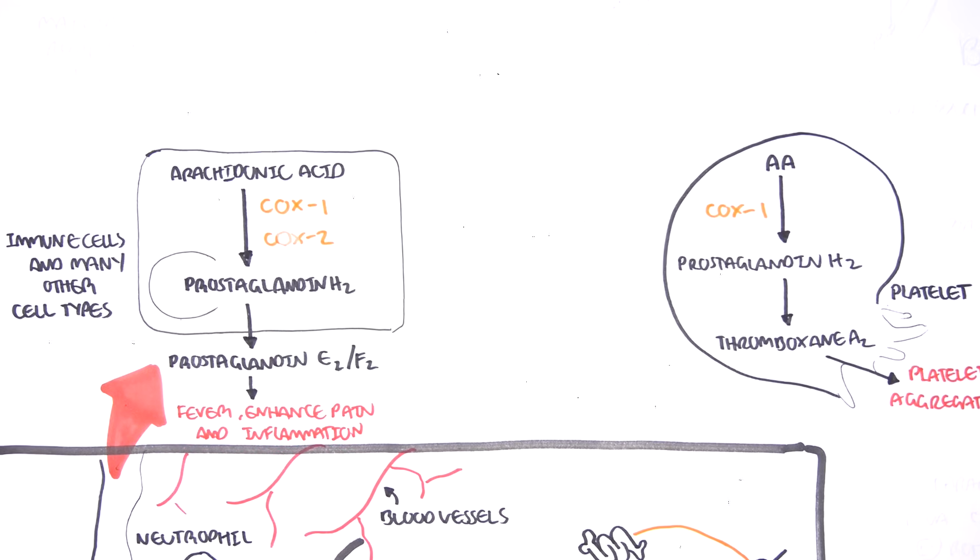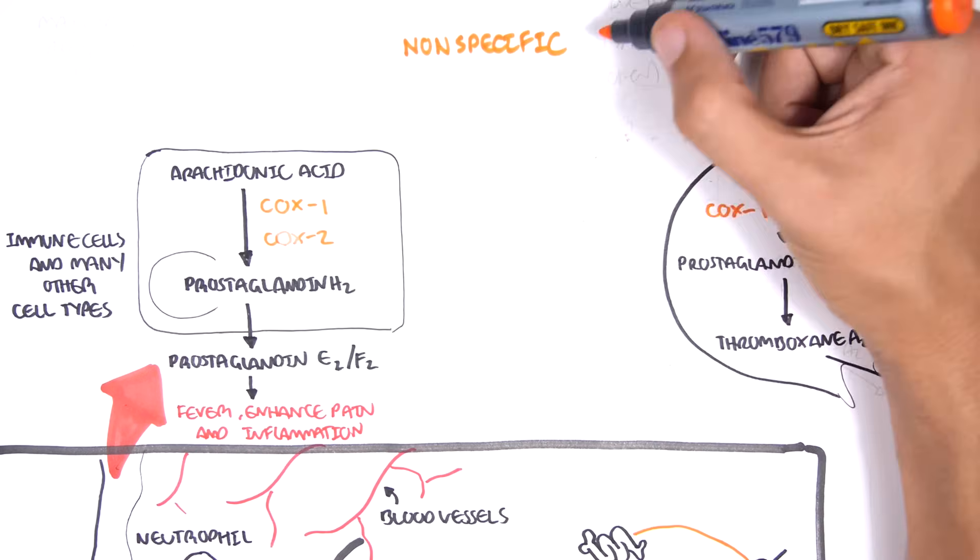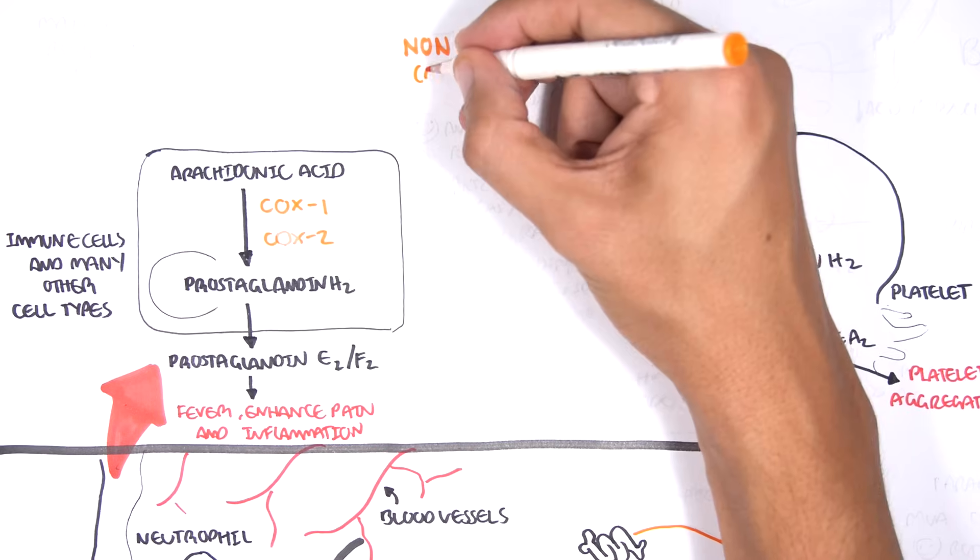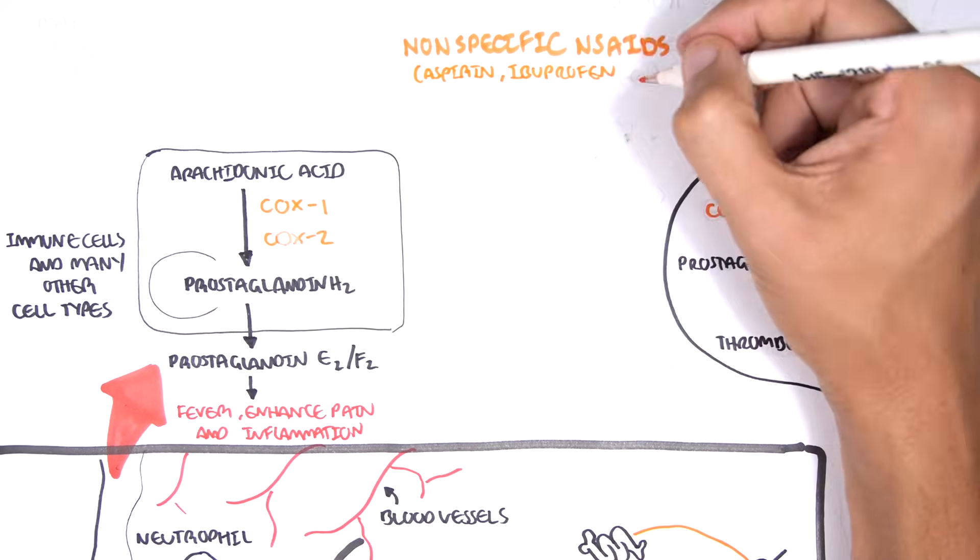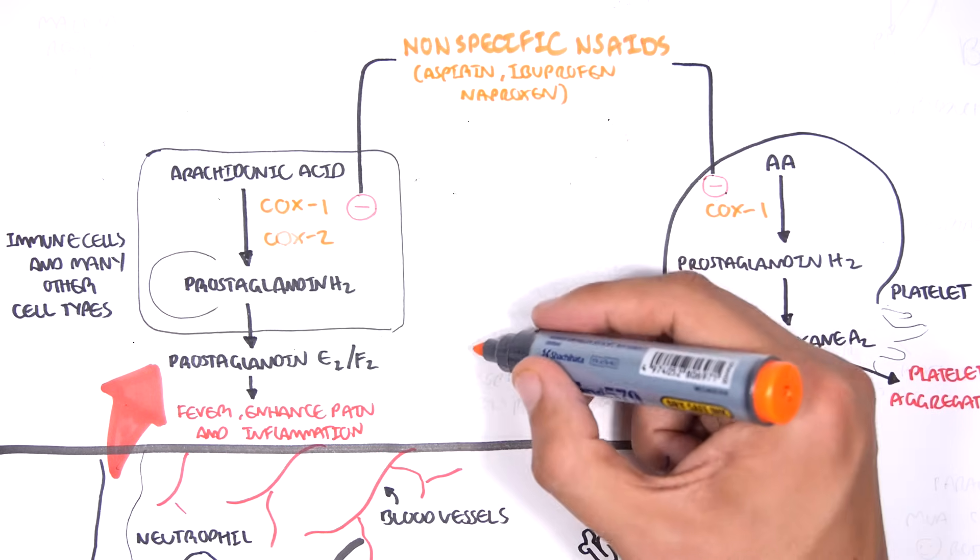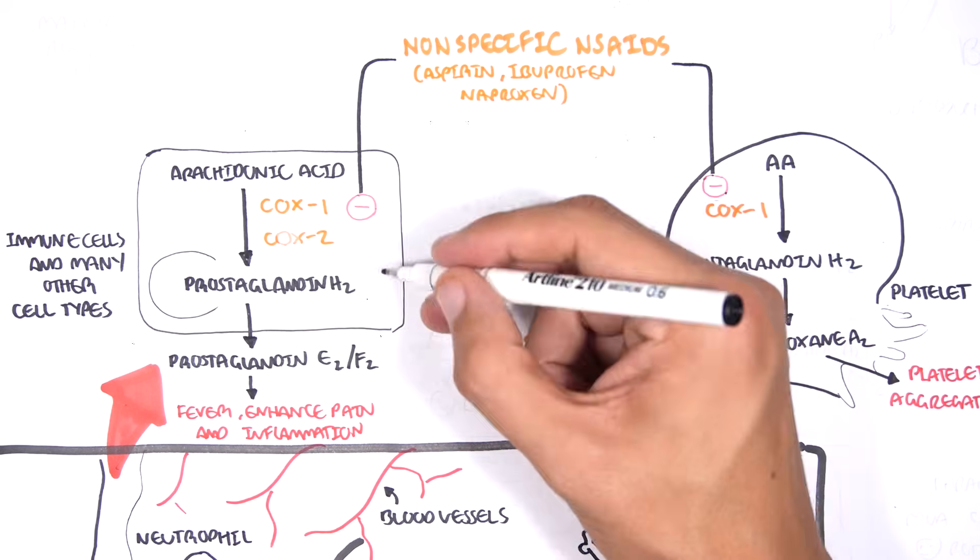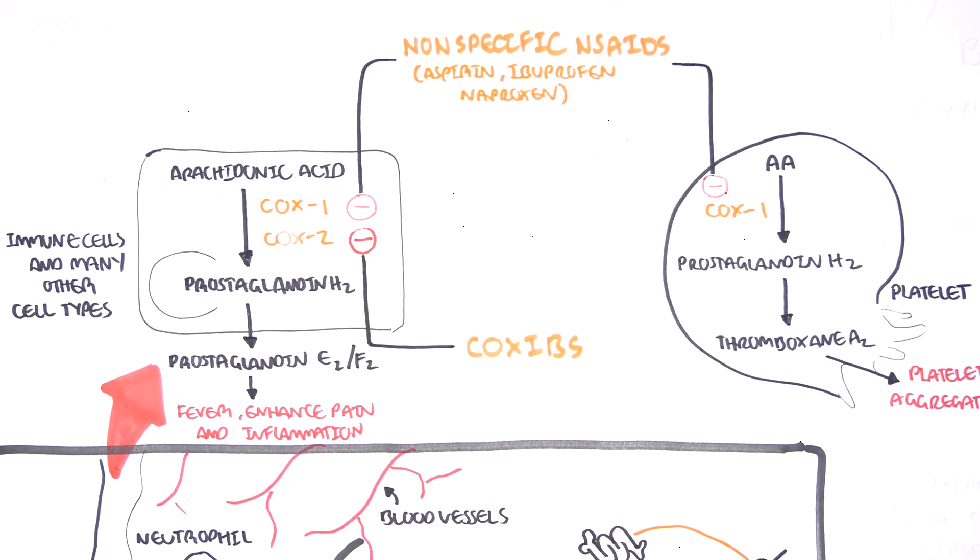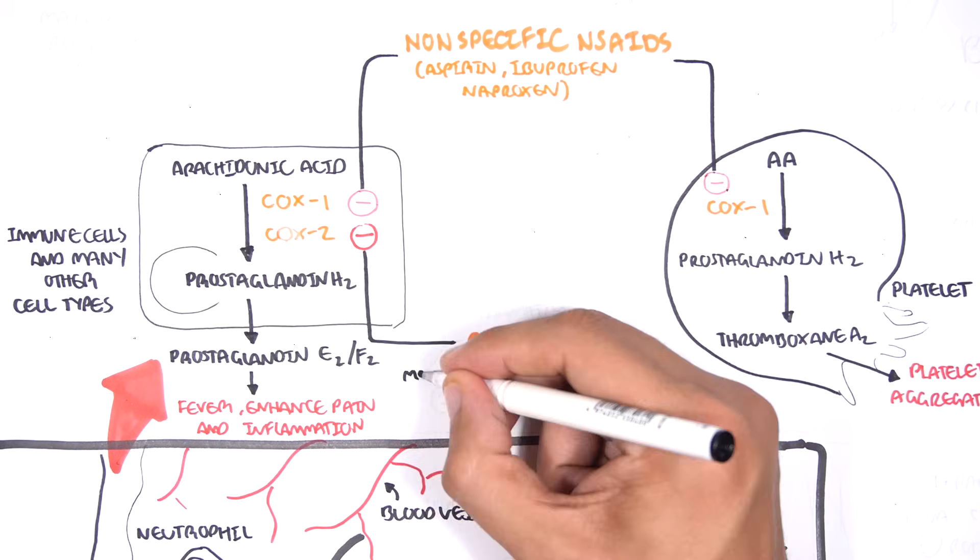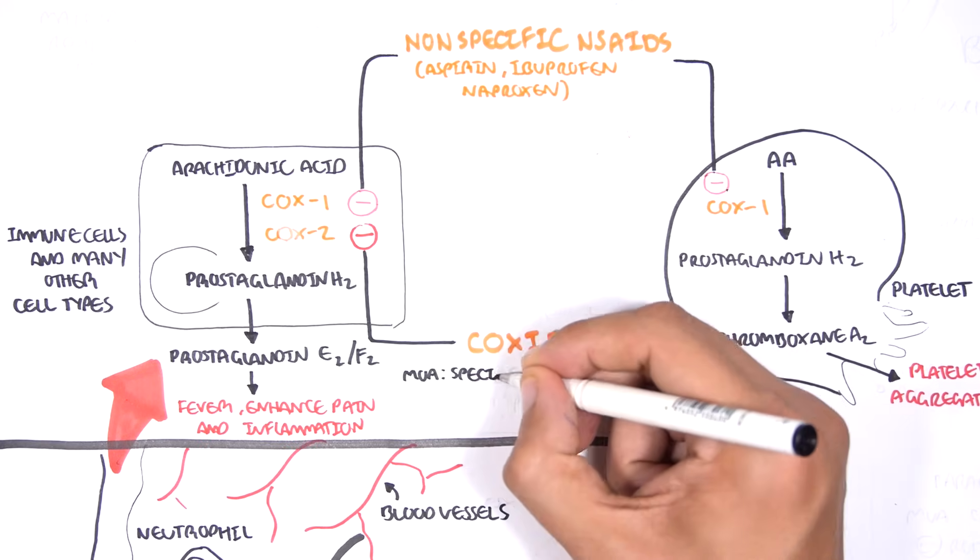NSAIDs work by blocking the COX enzyme. They can be broadly divided into non-specific, also known as non-selective NSAIDs, where they block both COX1 and COX2, and these drugs include aspirin, ibuprofen, and naproxen. Or they can be divided into specific, also known as selective NSAIDs, which block specifically COX2 enzyme. This is coxibs, such as celecoxib.